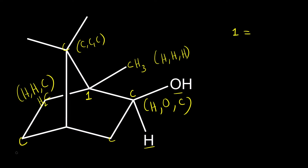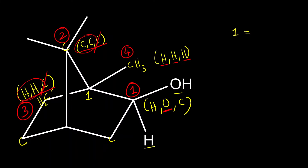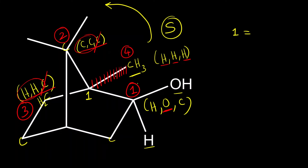Now compare and assign priority. Oxygen has the highest atomic number, so this gets first priority. All three are hydrogen here, so this gets fourth priority. Between the remaining two, carbon is the same but here there are two carbons and here there are two hydrogens — carbon has higher atomic number, so this gets second priority and this gets third. The fourth priority group is on the dash bond, away from us. The order one, two, three is anti-clockwise, so it should be S, and since the fourth priority is on the dash bond, it remains S. So carbon one is S configuration.